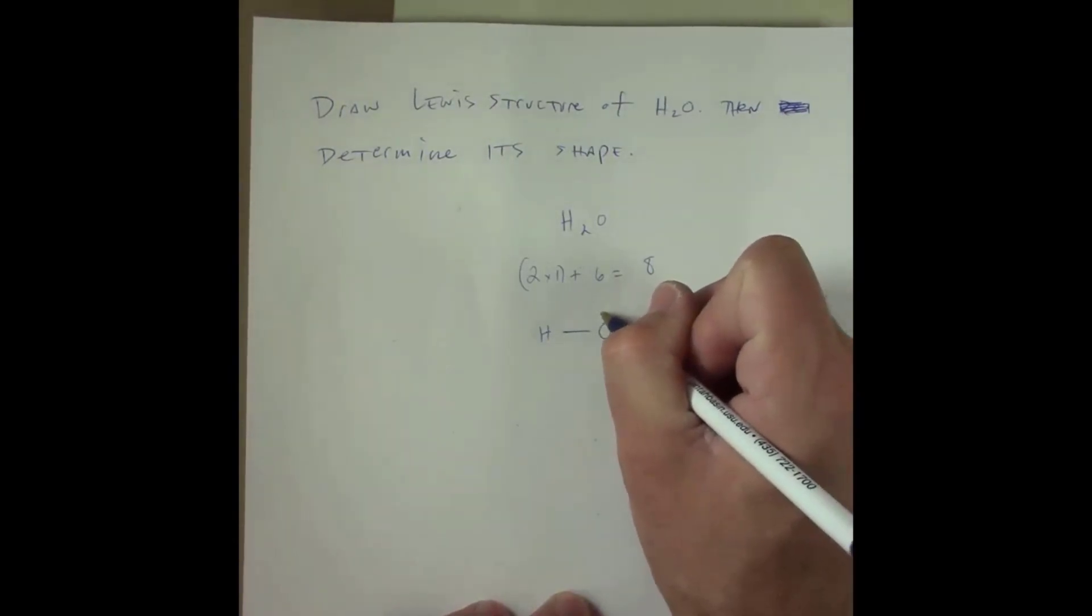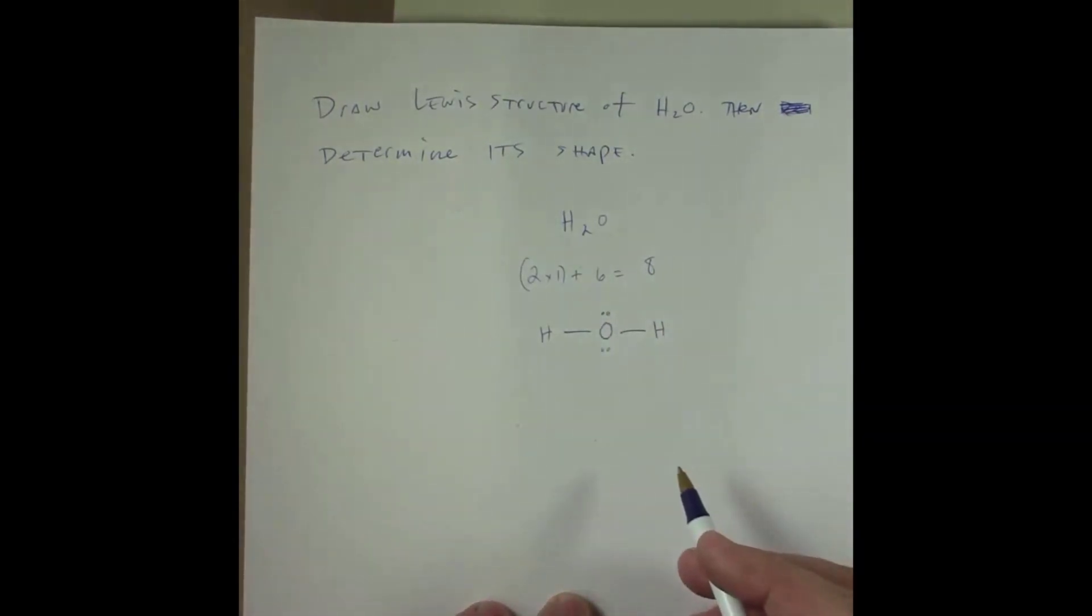So at this point each of those hydrogen atoms is fulfilled. I'll take my remaining electrons of my eight and put them here. I now count the total number of electrons I've laid out in this Lewis structure: two, four, six, eight. I've used all of my electrons.